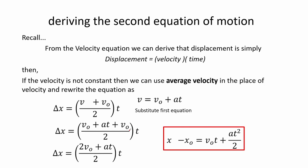Now let us derive the second equation of motion. We recall that displacement can be derived from the equation of velocity. So we can have the equation displacement equals velocity times time. From there, if the velocity is not constant we can use the average velocity which is simply initial velocity plus final velocity divided by 2. Then we can rewrite it into change in x equals the average velocity times time.